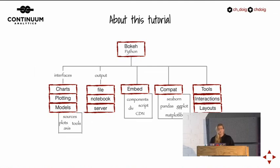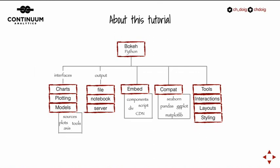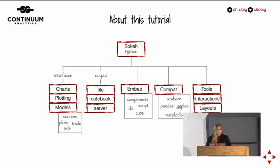For this tutorial we're going to focus on the Bokeh Python interface. In this library we encounter different levels of APIs: one is called Charts, another is called Plotting, and the low-level Bokeh objects are called Models. We're going to see those interfaces and why you would want to use each one. There are also different output options: you can output an HTML file, output to the IPython notebook, or use the Bokeh server.